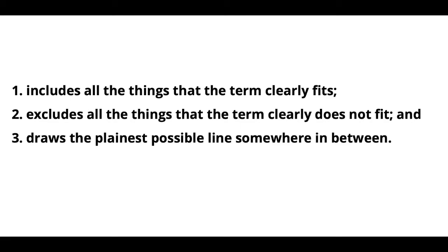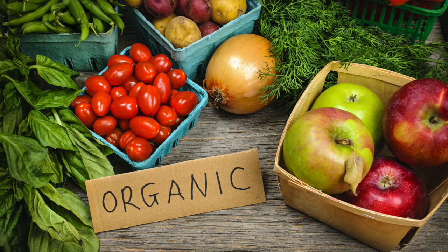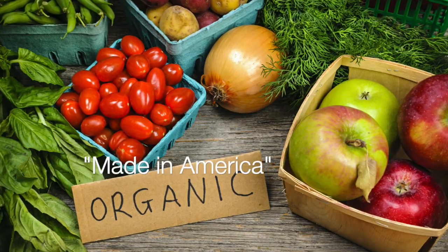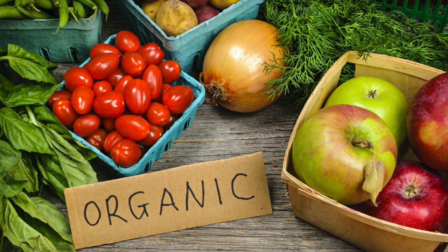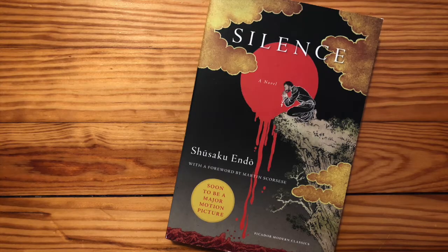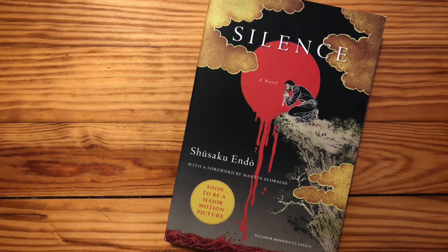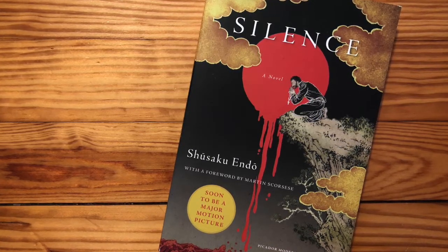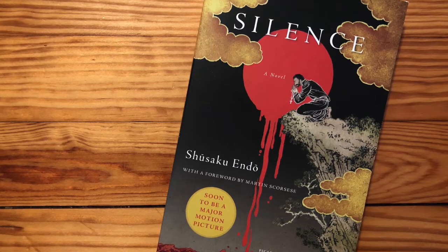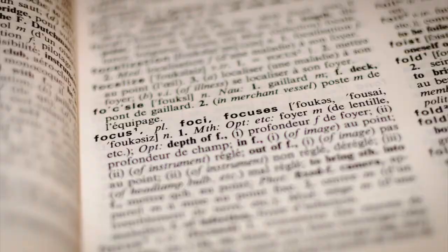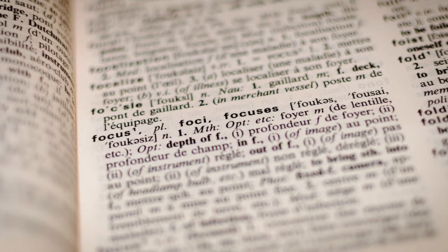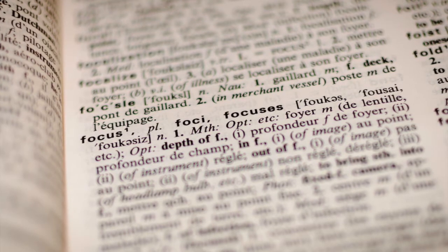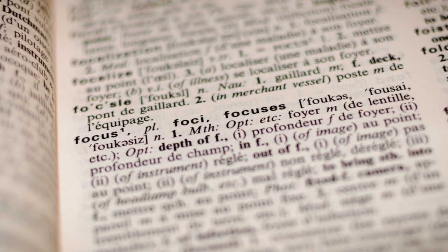Some terms you'll use to practice with in your activity assignment include terms that are interestingly ambiguous in our society, such as 'natural' or 'made in America.' And there are some terms on the activity that are relevant for the book we are reading in this unit, Endosilence. What is the definition of silence, for instance? This term is one the protagonist of the novel is going to think a lot about. The second part of the activity asks you to find an example of a distinction being made in your assigned reading this week and identify the two ideas being distinguished, analyzing the similarities and differences between them.